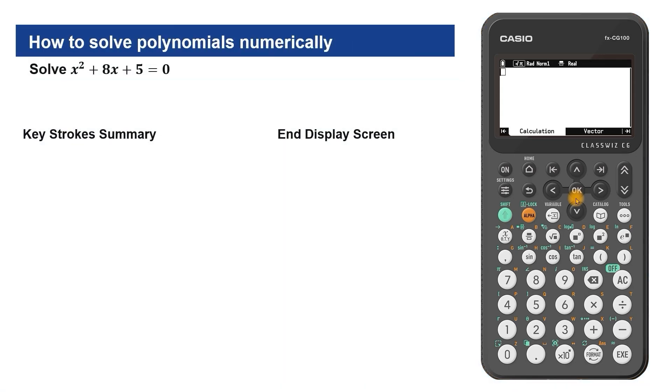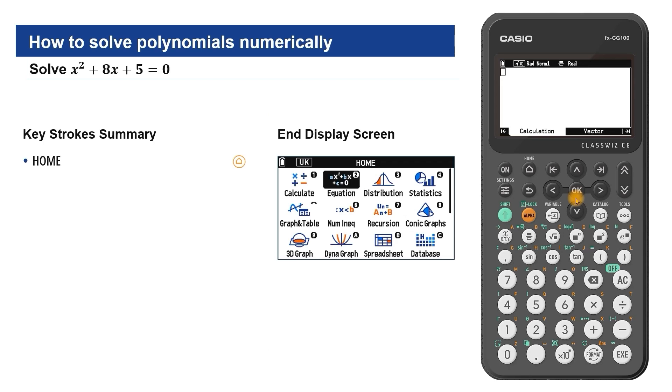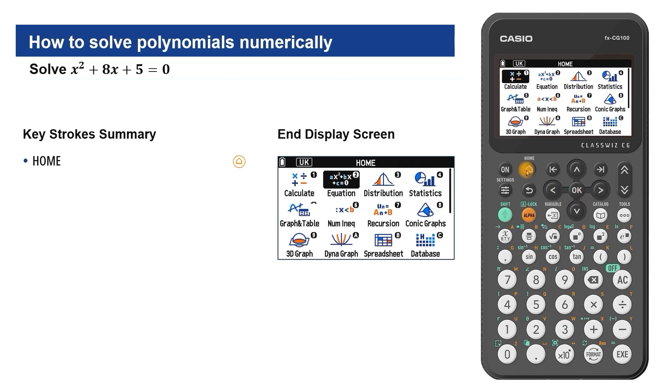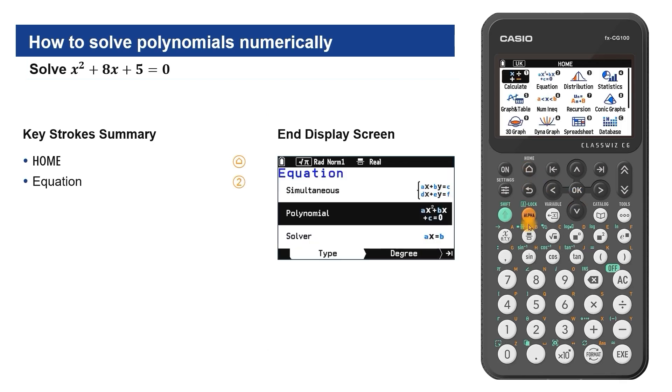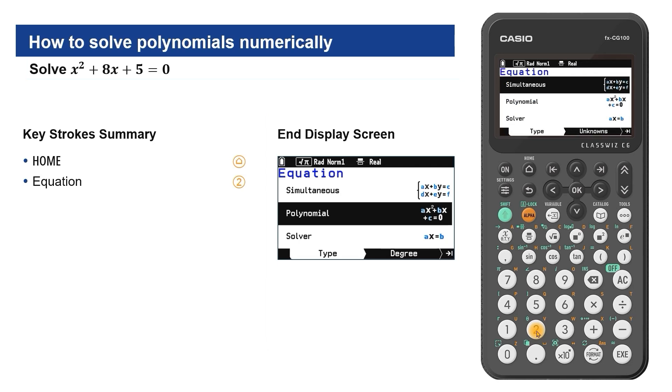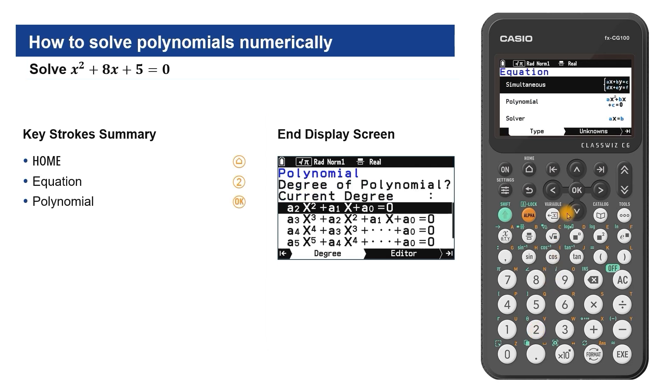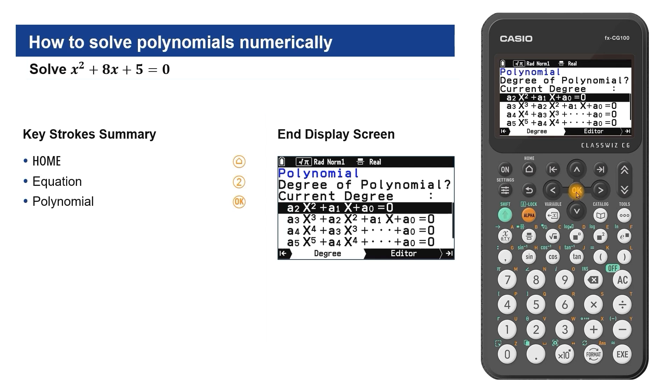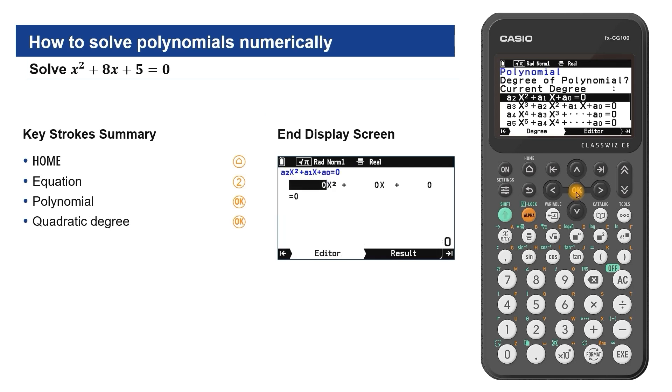Initially, we will look at solving this quadratic equation. Press home and either scroll to equation and select or use the shortcut 2. From the equation screen, select polynomial. The choice of degree 2 to 6 is given. Select quadratic degree.